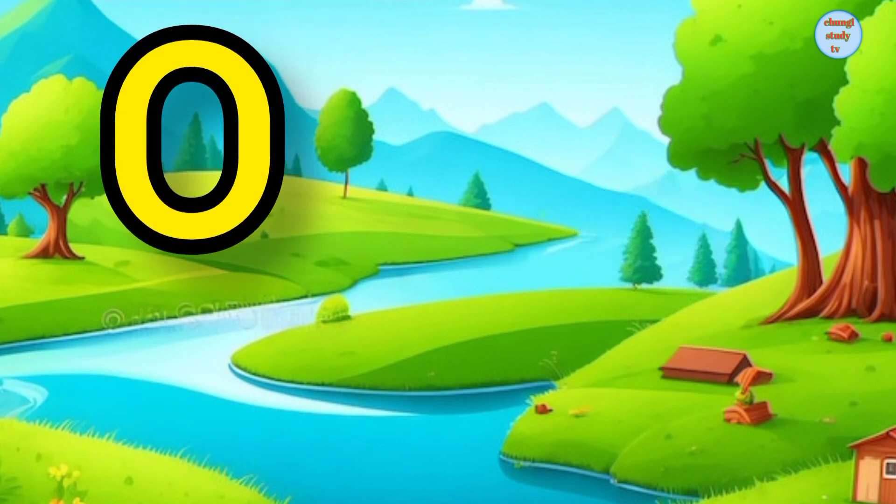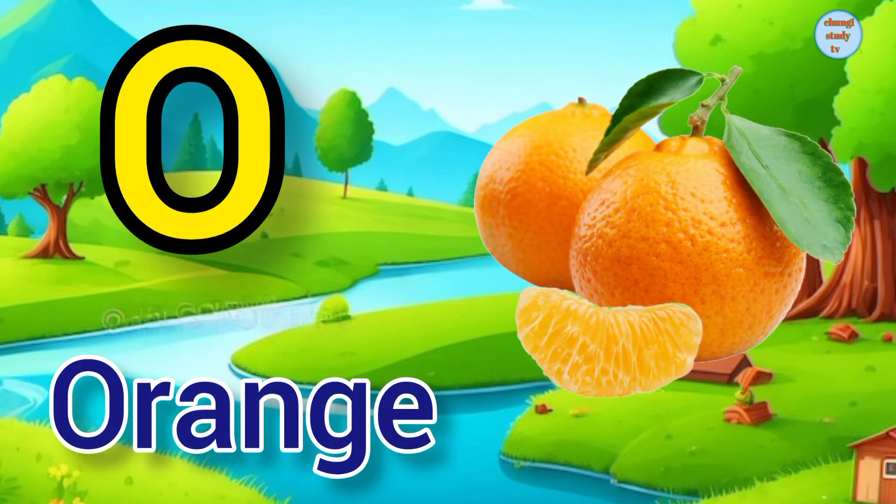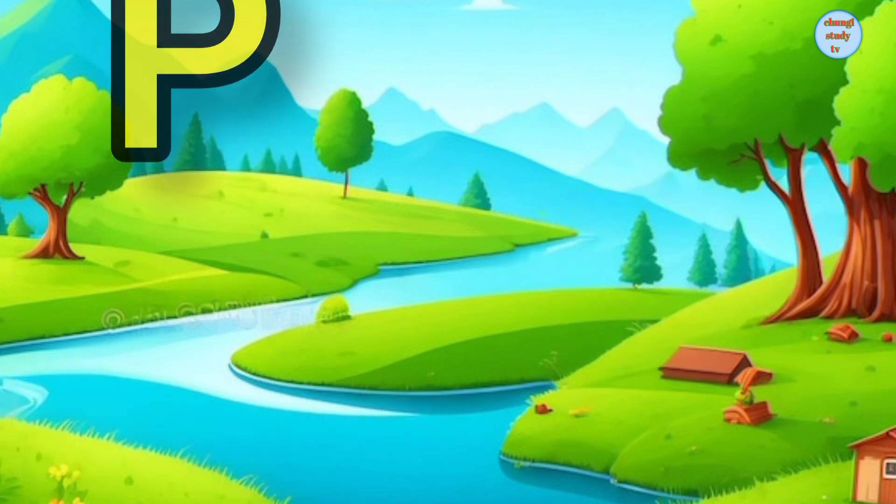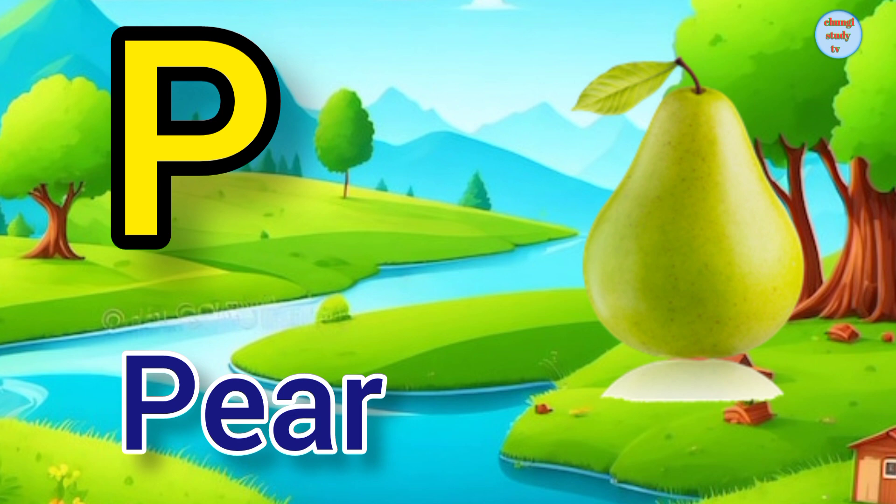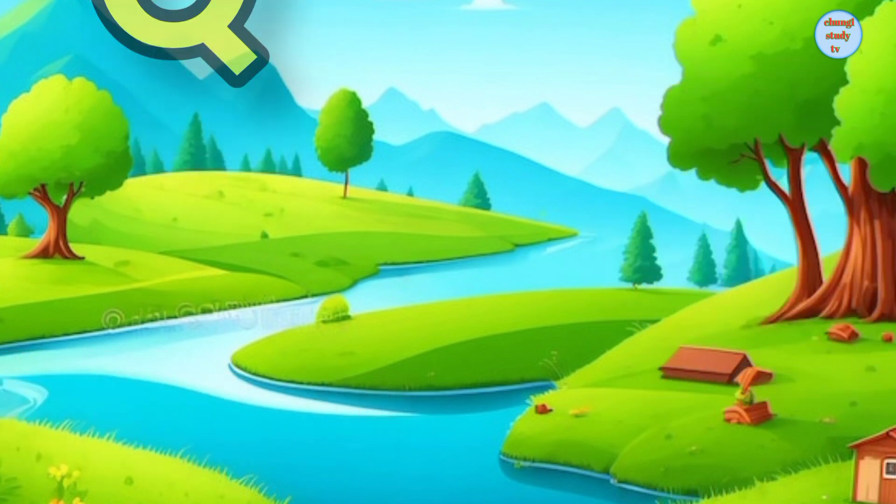O. O for orange, Orange means Antara. P. P for pear, Pear means naspati.